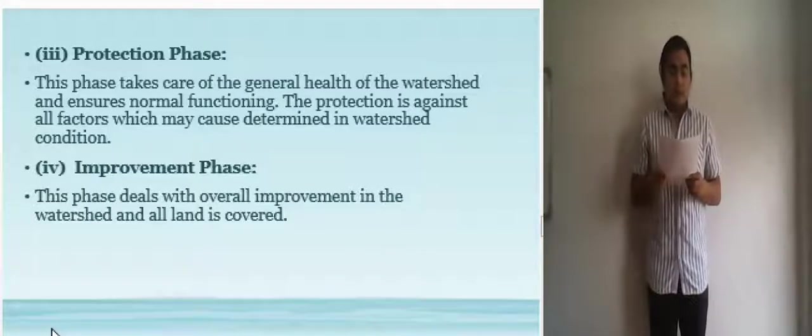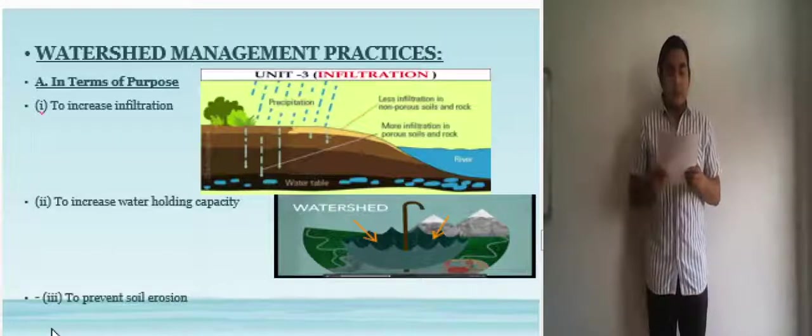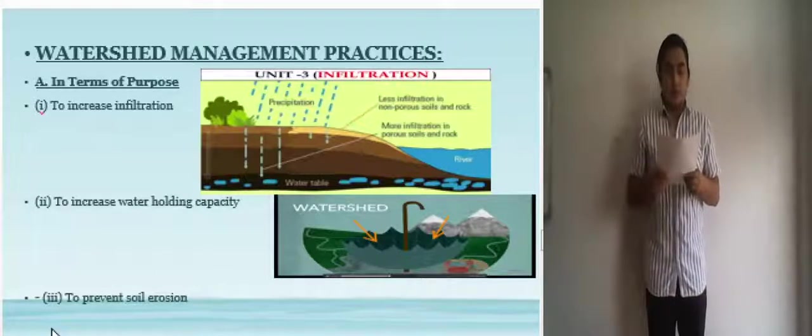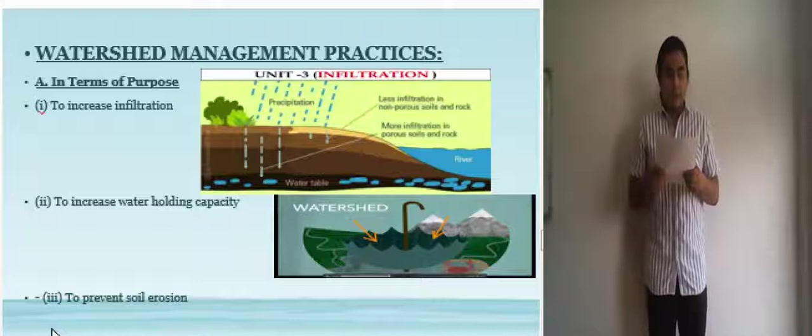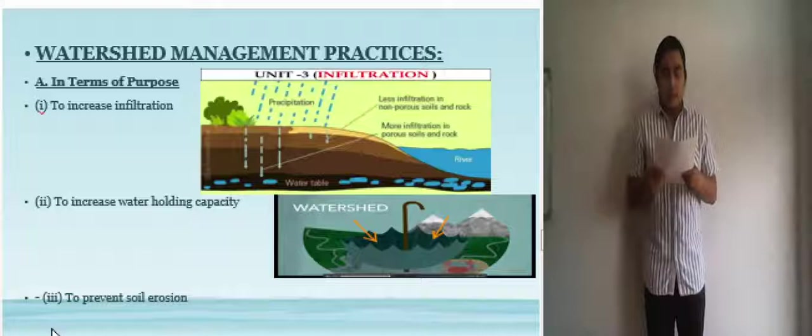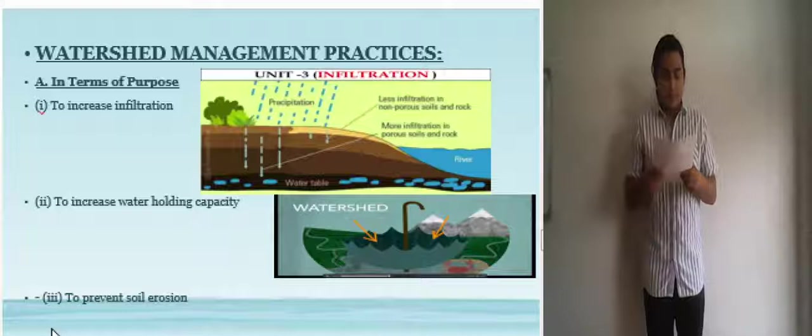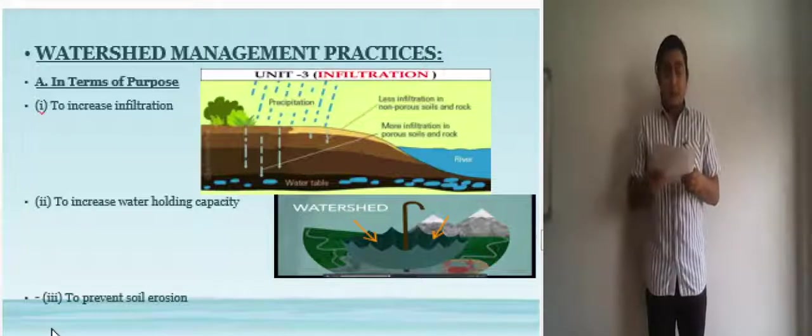Now there are also watershed management practices in terms of purpose. The first one is to increase infiltration. To increase the infiltration of rainwater or water from snow melt into soil to avoid dry soil and flooding. Second one is to increase water holding capacity. To increase the amount of volume of the water the watershed can hold so that it can serve more purpose, especially to the human needs. And lastly, to prevent soil erosion. Avoiding flooding which can cause casualties and restore the environment and agriculture.